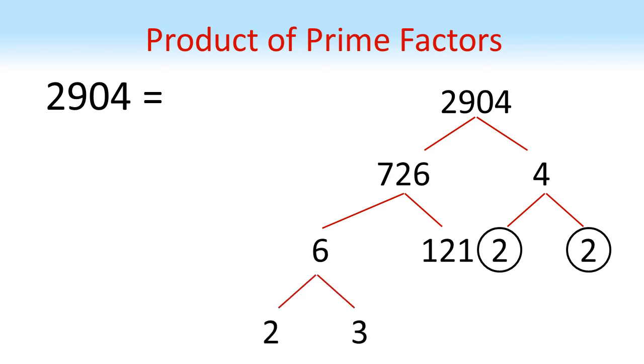So 6 is equal to 2 times 3. They're both prime, so we'll circle those. And 121 is equal to 11 times 11. Again, 11 is a prime number, so let's circle those.